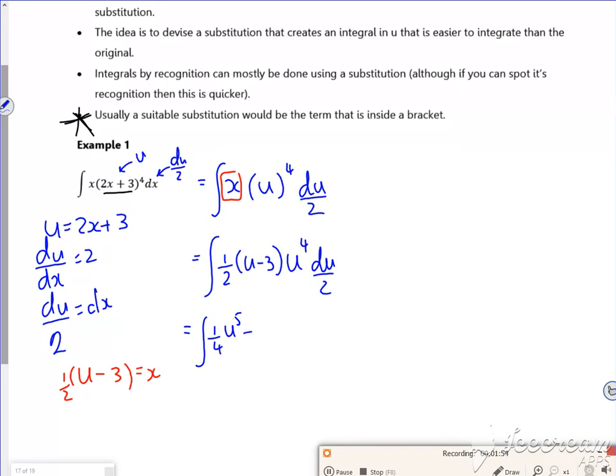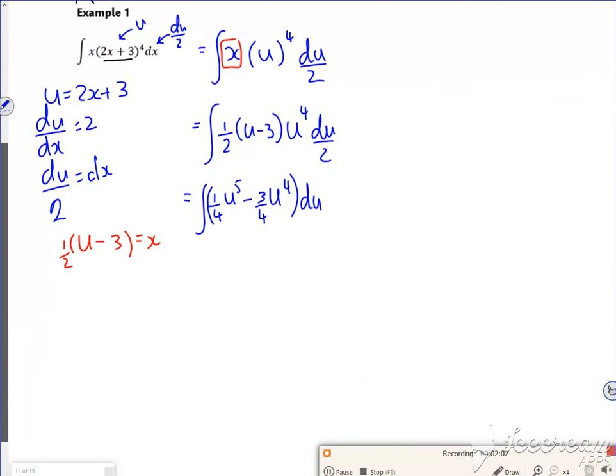Then I've got a half times a half is a quarter, times by minus 3 is minus 3 quarters, times by u to the 4 du. So I've expanded my brackets and tidied it up a little bit.